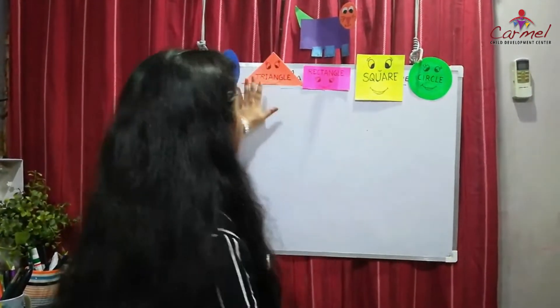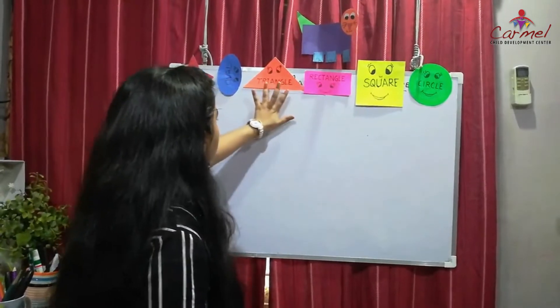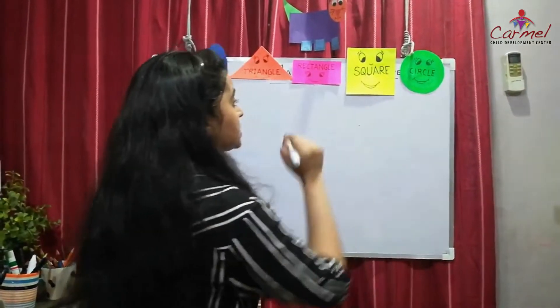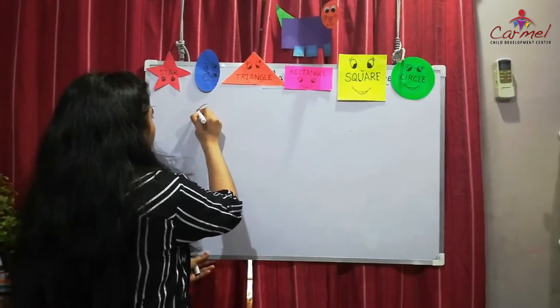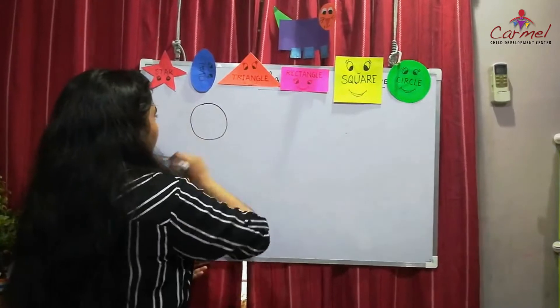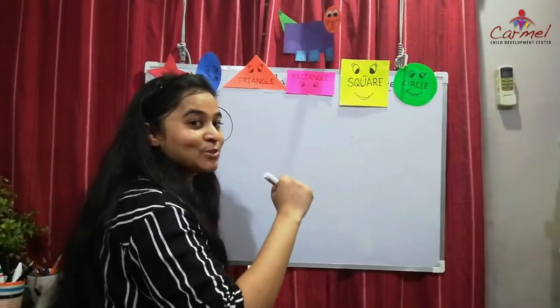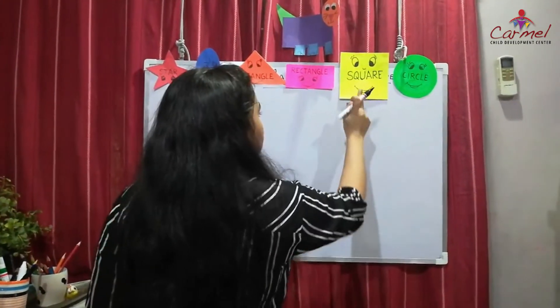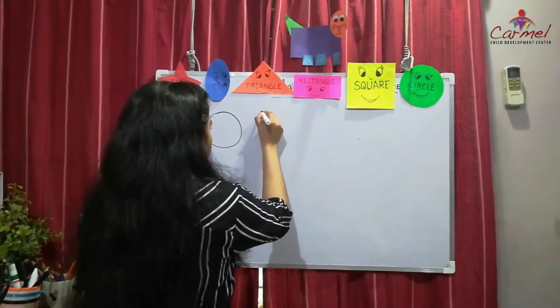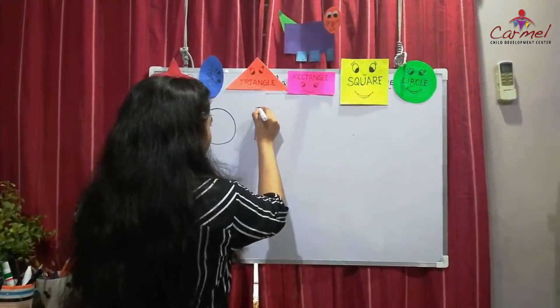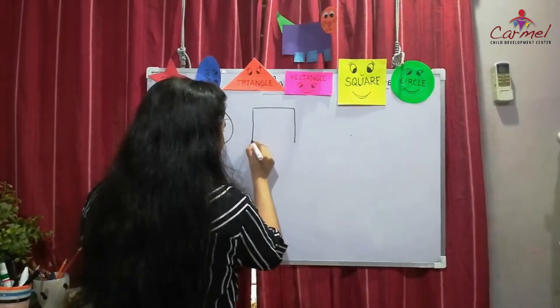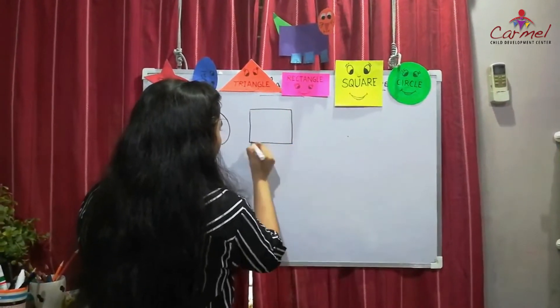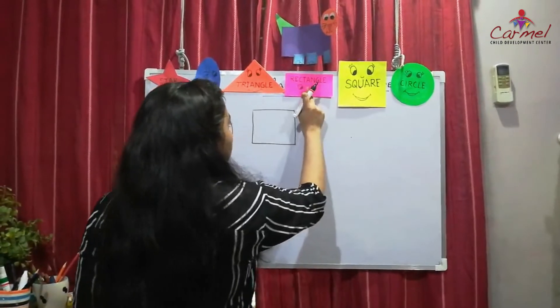So far we have learnt circle, square, rectangle, triangle, oval, and stars — six shapes! Now we are going to draw the shapes. First, the circle — draw it like this. You can also see a circle at night: that's the moon! The moon looks like a circle. Now let's draw the square — in the square shape, all four sides are equal: one, two, three, four.